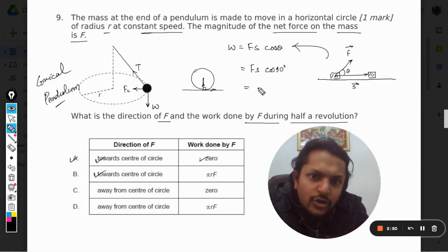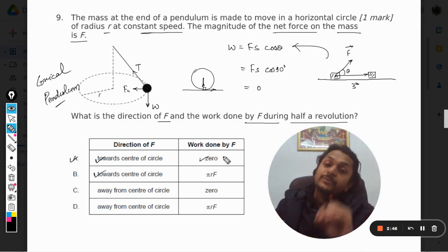So this becomes 90 degrees, and cos(90°) becomes zero. That is why the work done by the centripetal force is always zero.